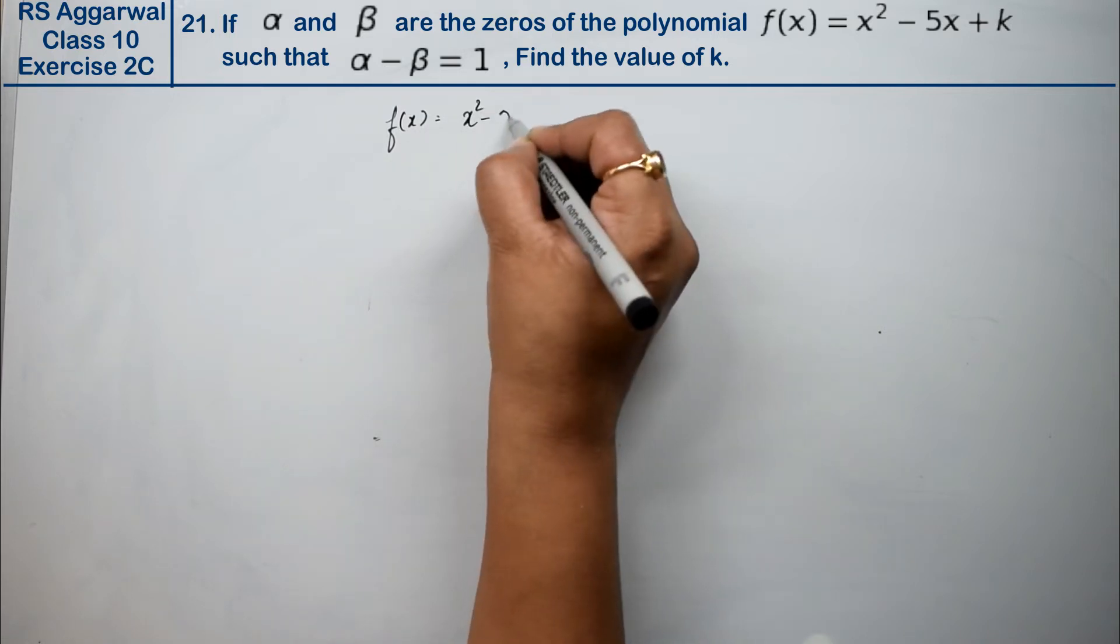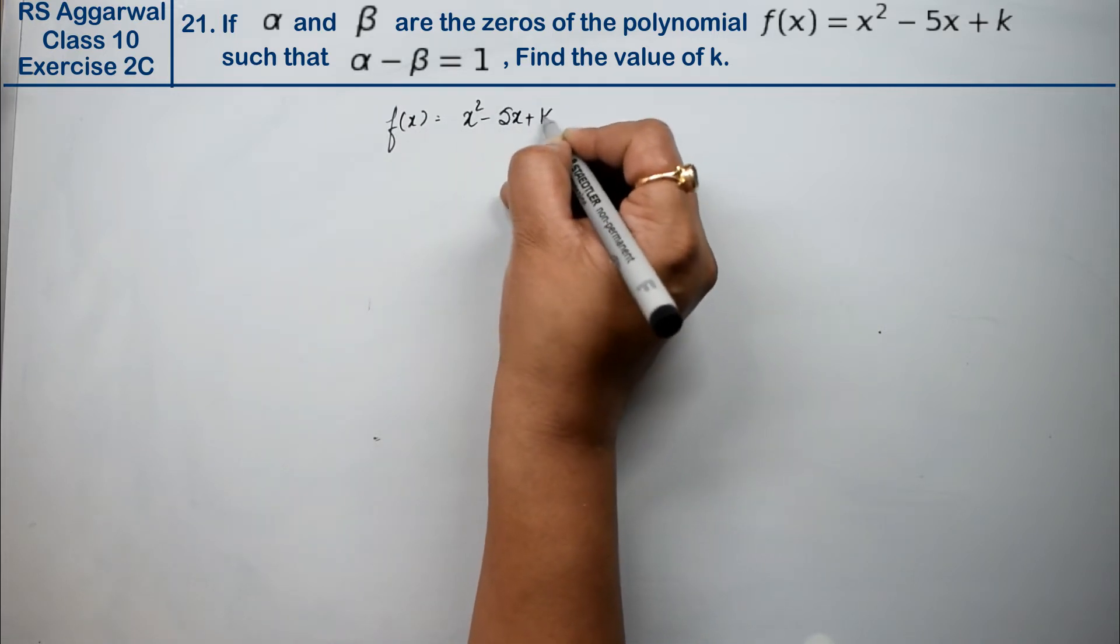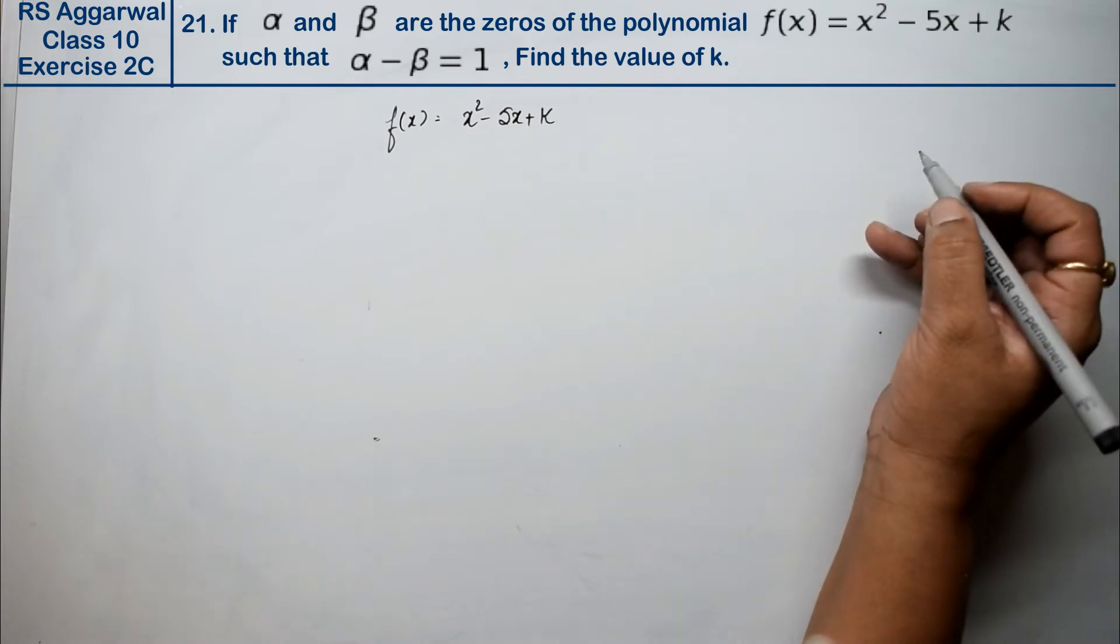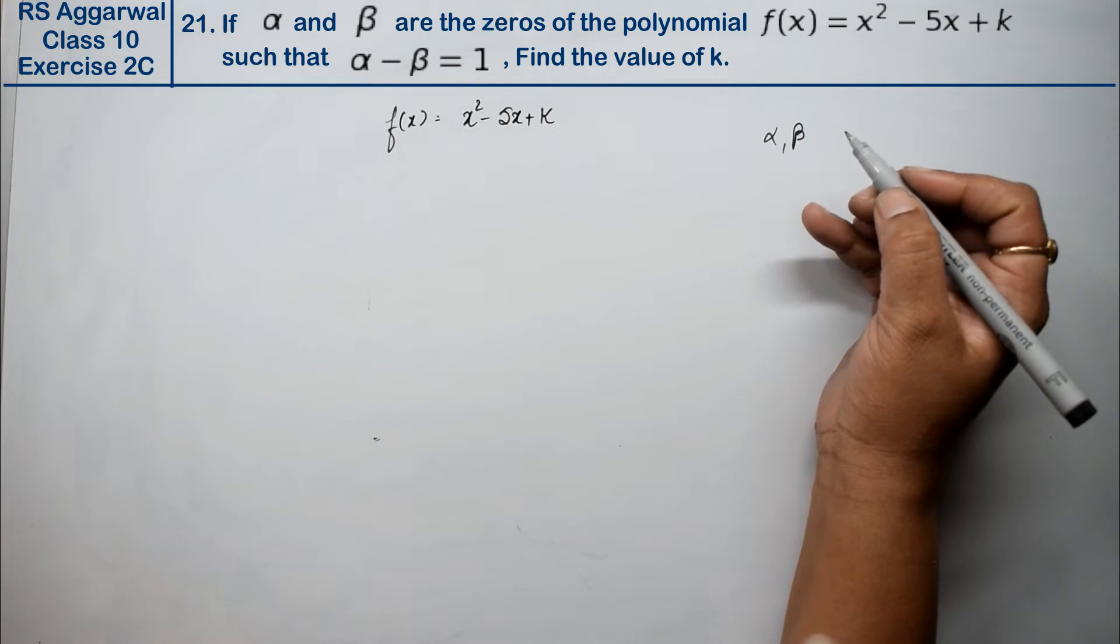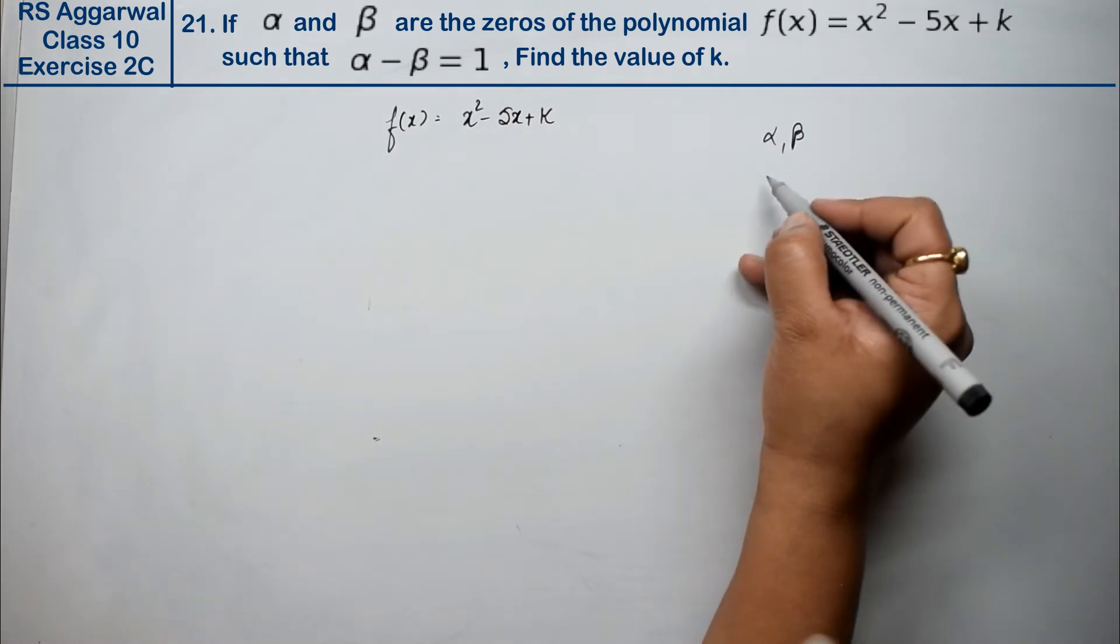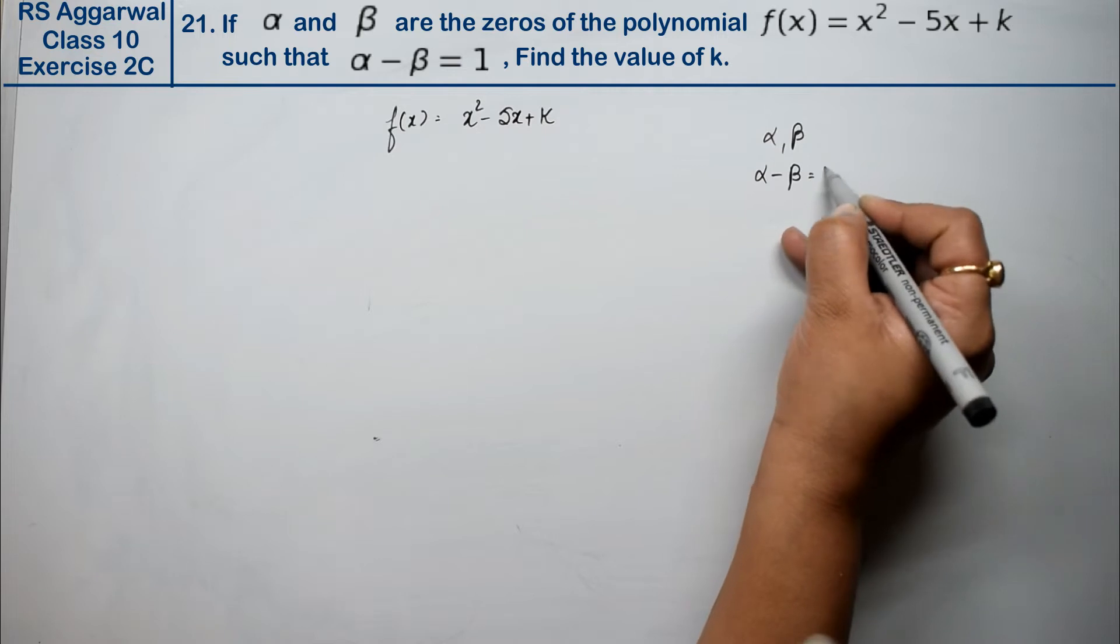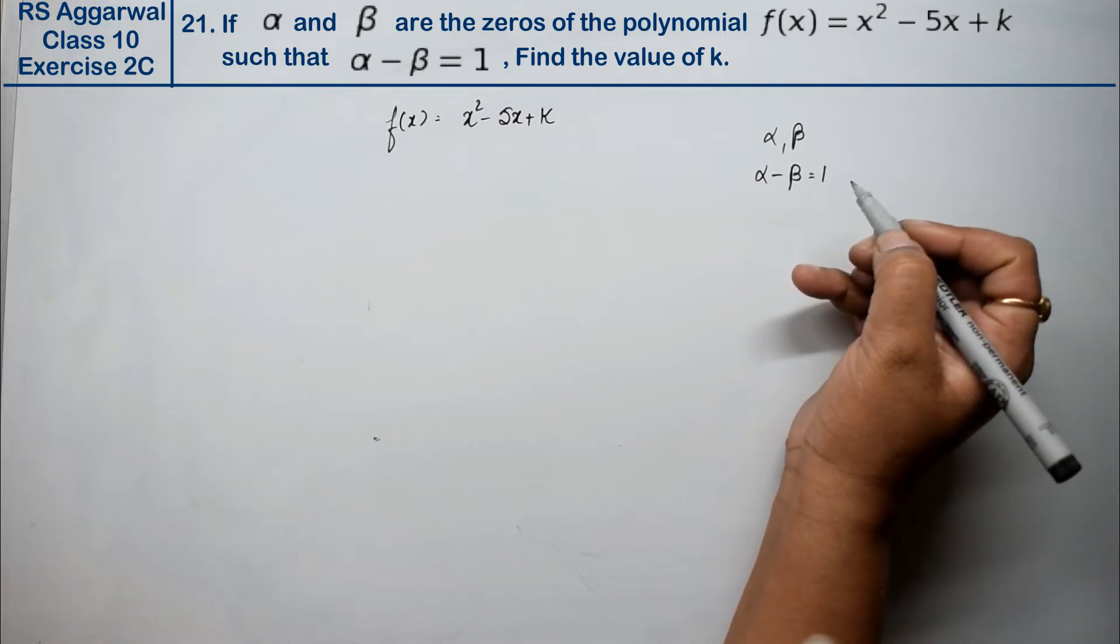And α and β are the zeros of the polynomial, such that α - β = 1. We need to find the value of k.